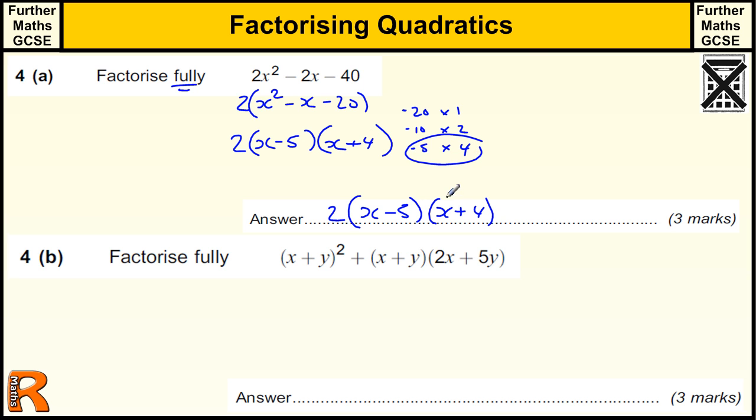Now, if you hadn't noticed the 2, and you got to a point where you had something like x plus 4 and 2x minus 10, or 2x plus 8 and x minus 5, then you would have probably got a special case mark of 2, because that's almost factorised out, you just haven't taken the extra factor out of these expressions.